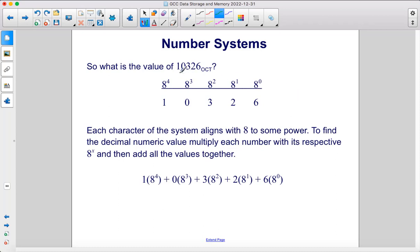So what is the value of 10326 in octal, in decimal? We have 8 to the 4th power, 8 to the 3rd, 8 to the 2nd, 8 to the 1st, and 8 to the 0th. Those are the places. We place this 1 in the 5th column here, 0 in the 4th column. This 3 goes in the 3rd column from the right, 2 goes in the 2nd, and the 6 goes in the farthest right column.